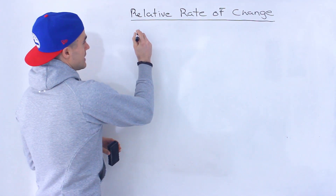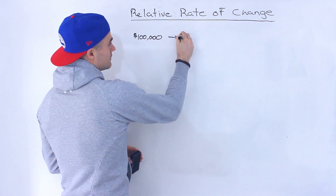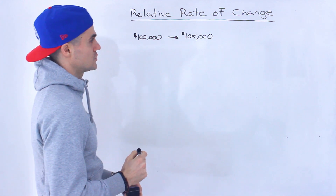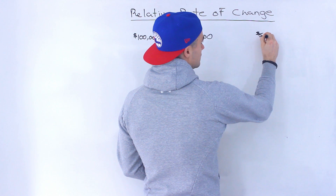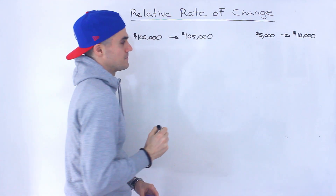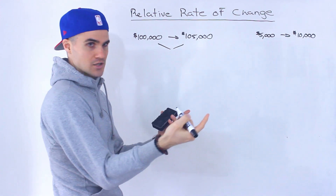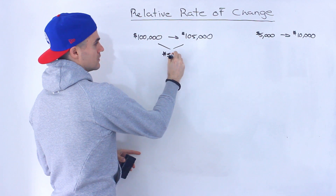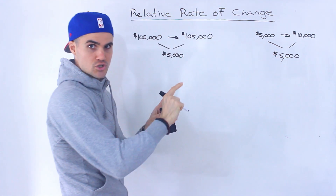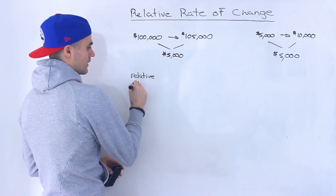Let's say that we have two different companies. This company over here, in one year it was making $100,000 in revenue, and in the next year it's making $105,000 in revenue. Now let's take another company — they're making $5,000 in revenue, and then the next year they're making $10,000 in revenue. Notice that in both of these scenarios the absolute change in revenue is the same: it's $5,000. Both companies' revenue went up by $5,000. The absolute change is the same.